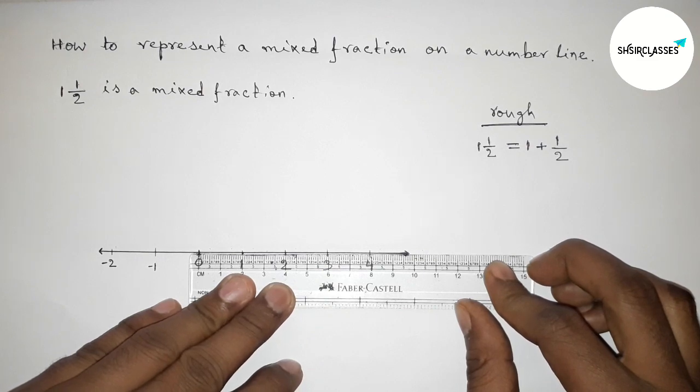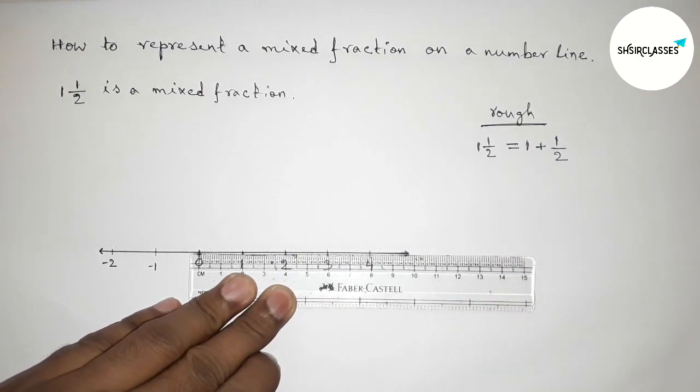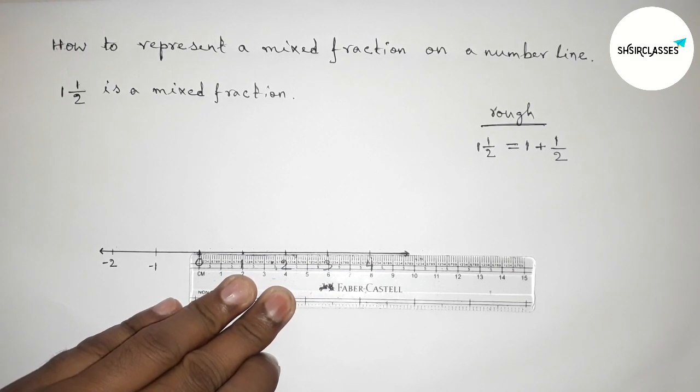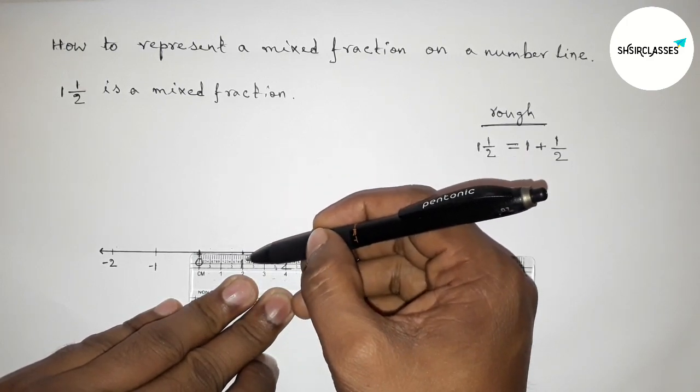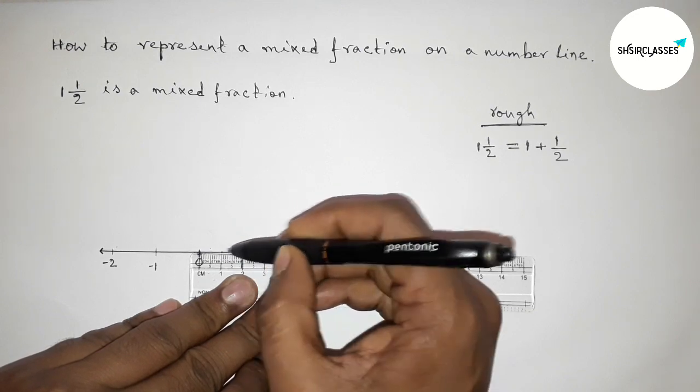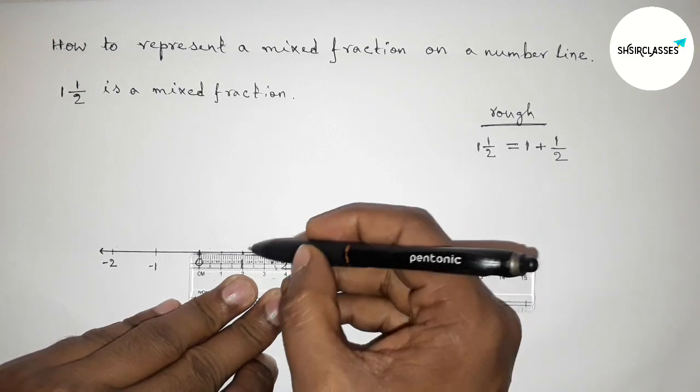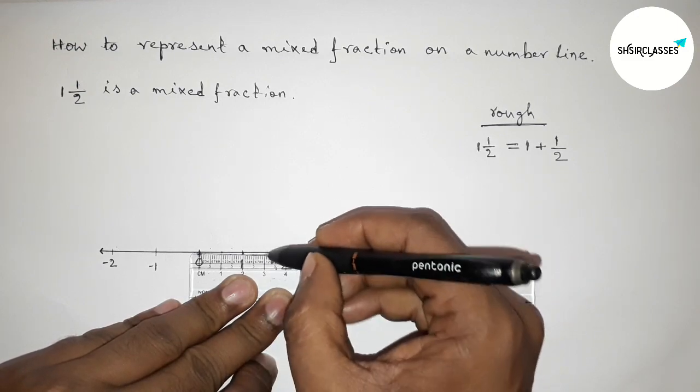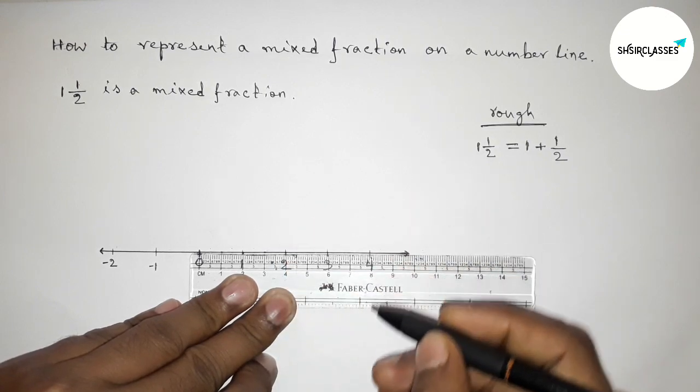First taking the half between 0 to 1. Since the length between 0 to 1 equals 2 centimeters, so half will be 1 centimeter. So this is half between 0 to 1. Similarly, half between 1 to 2, so this is half between 1 to 2.